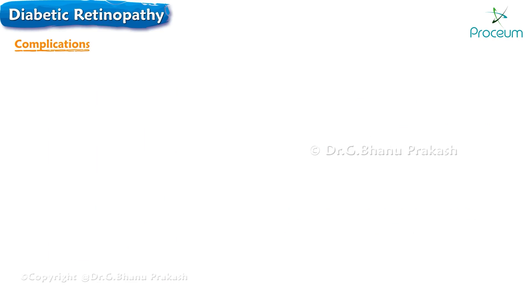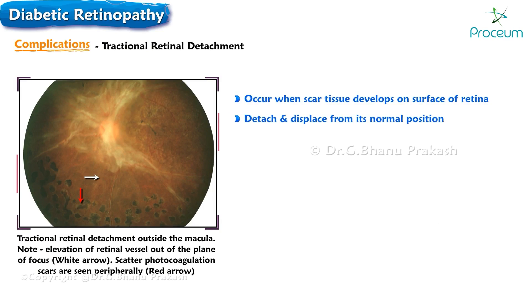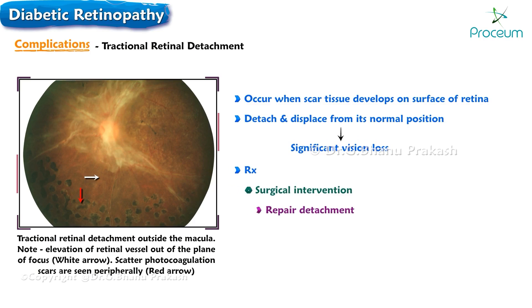The last complication is tractional retinal detachment, a condition where scar tissue develops on the surface of the retina, causing it to become detached and displaced from its normal position. This condition can result in significant vision loss and requires surgical intervention to repair the detachment and remove the scar tissue. Thank you for listening to this module about diabetic retinopathy.